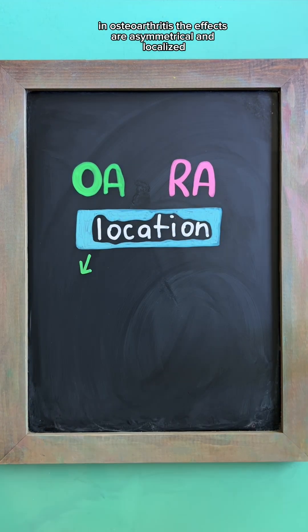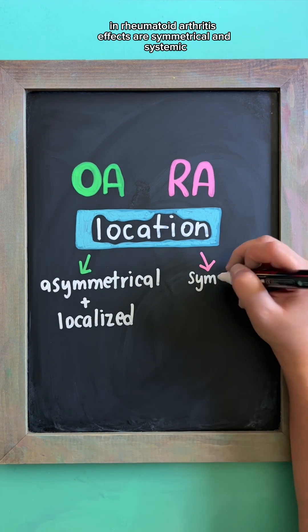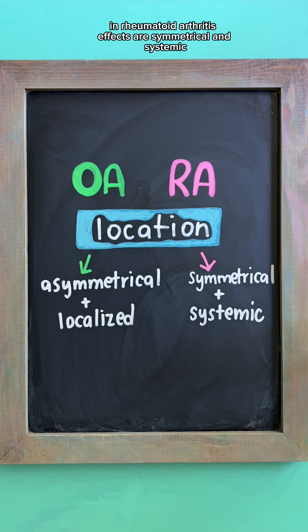In osteoarthritis, the effects are asymmetrical and localized, while in rheumatoid arthritis, the effects are symmetrical and systemic.